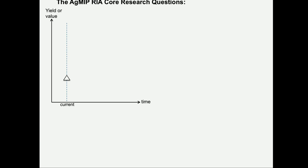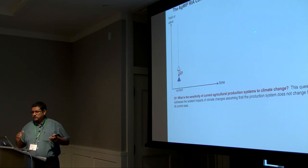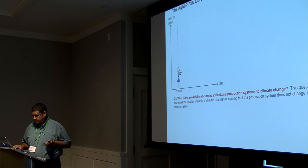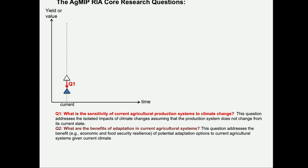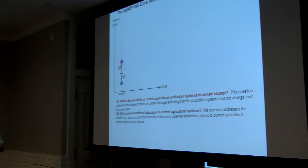The ACMI core questions: the first is what is the sensitivity of current agricultural production systems to climate change? You can think about this as yield or another value like farm income in the current period. If we bring climate change to this current period, assuming the effects are negative, then we have this effect reducing that value — that's core question one. The second core question is what are the benefits of adaptation in the current agricultural systems? Assuming we have a new technology, for example a climate-smart agriculture technology, we want to assess what the benefits are in the current period.